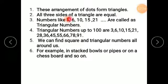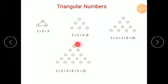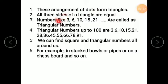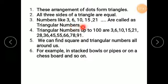All 3 sides of a triangle are equal. See — how many dots are there? 3 plus 2 equals 5 on each side. All the sides are equal. Numbers like 3, 6, 10, 15, and 21 are called triangular numbers.